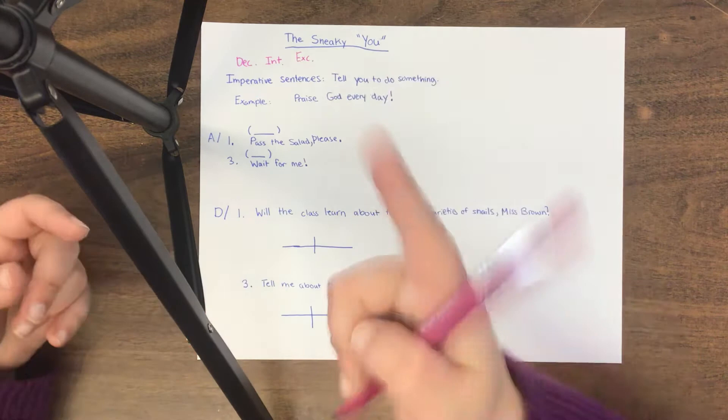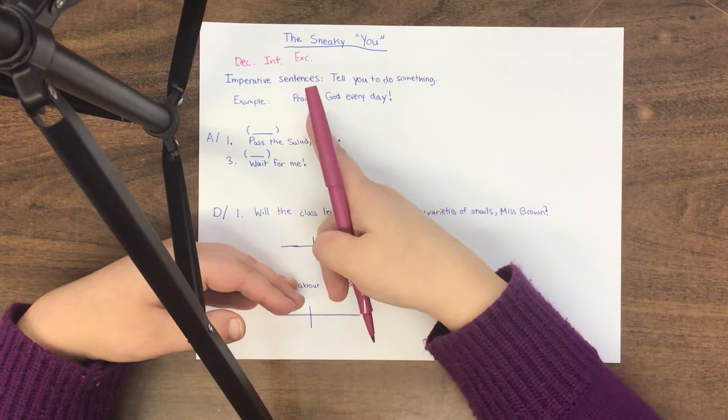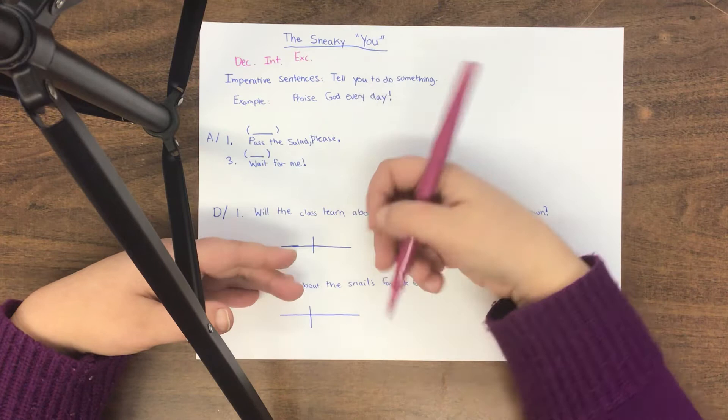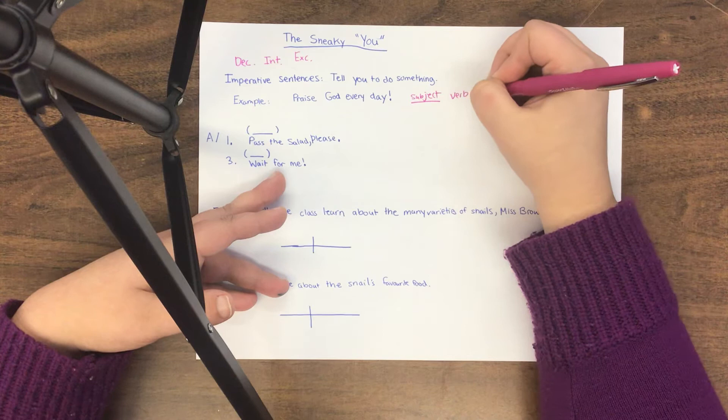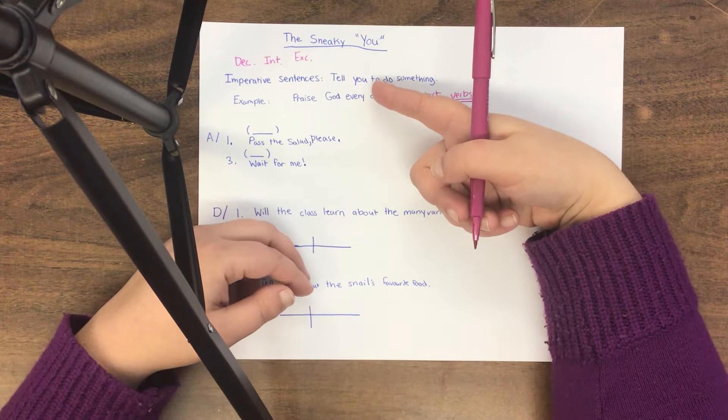So for example, this is an imperative sentence right here. Praise God every day. Now, when we have sentences like this, usually we try to locate the subject by underlining it once and the verb or verbs by underlining them twice. In a sentence like this, it's really easy to find the verb. What are they doing? Well, they're praising. Praise God every day.